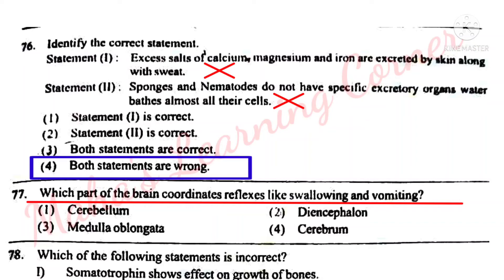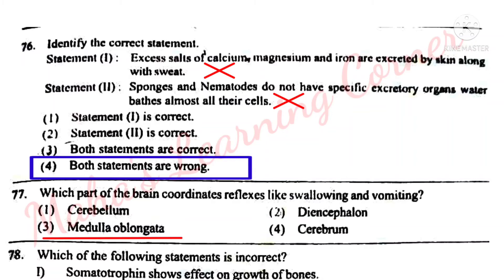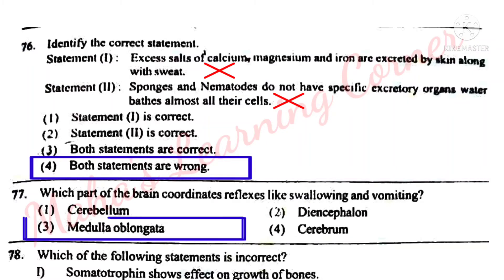Which part of the brain coordinates reflexes like swallowing and vomiting? Options: Cerebellum, Diencephalon, Medulla oblongata, Cerebrum. Correct answer: Option 3 – Medulla oblongata.